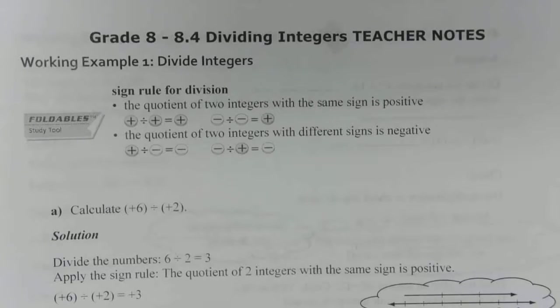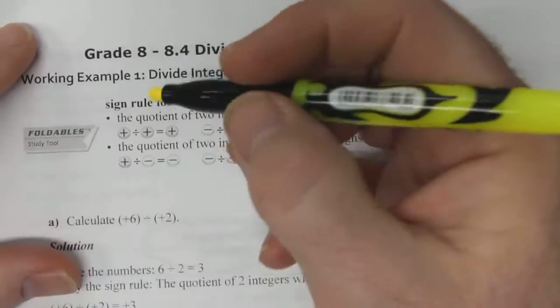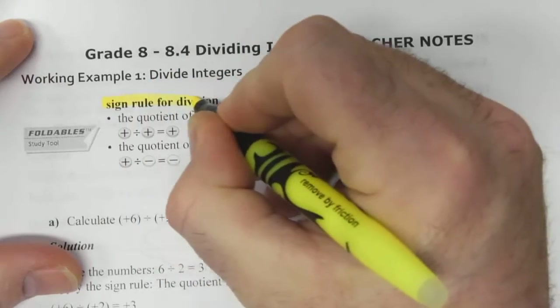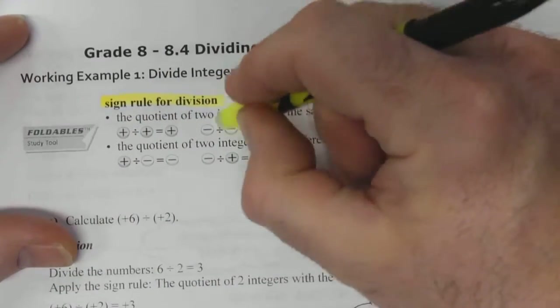2.4 Dividing Integers. We're going to do an example for dividing integers, but first we need to look at our sign rules for division.